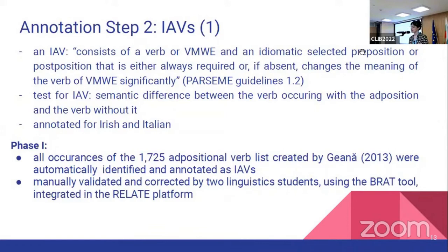The second step of the annotation is the introduction of inherently adpositional verbs. What is essential for inherently adpositional verbs is their preposition — if you delete their preposition, their meaning is changed, as stated in the PARSEME guidelines. The selected preposition, if absent, changes the meaning of the verbal multi-word expression significantly. So the test for IAVs is deleting the preposition: if the meaning is changed, you have an inherently adpositional verb. This has also been done for Gaelic and Italian.